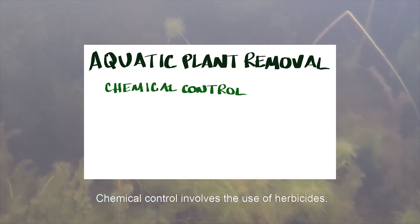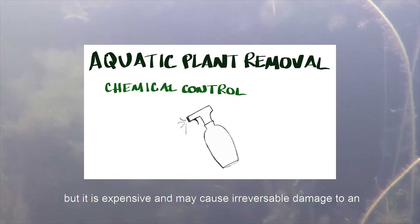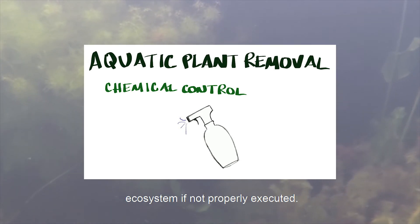Chemical control involves the use of herbicides. This method is very effective at completely removing a species, but it is expensive and may cause irreversible damage to an ecosystem if not properly executed.